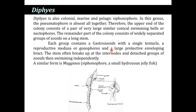Diphye is also a colonial, marine, and pelagic siphonophoran. In this genus the pneumatophore is absent, and therefore the upper end of the colony consists of a pair of very large, similar, conical swimming bells. The remaining part of the colony consists of widely separated groups on a long stem, each group consisting of a gastrozooid with a single tentacle and reproductive medusae or gonozooids. The protective envelope often breaks up at the internodes, and the detached groups then swim independently.